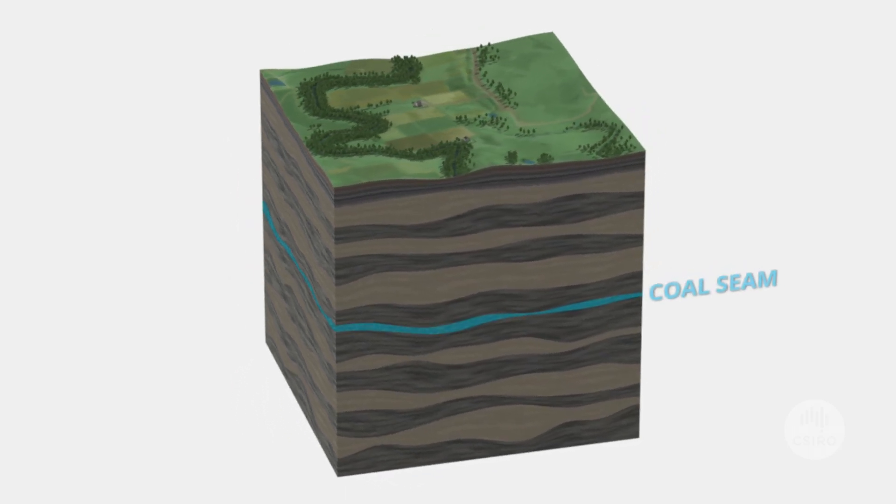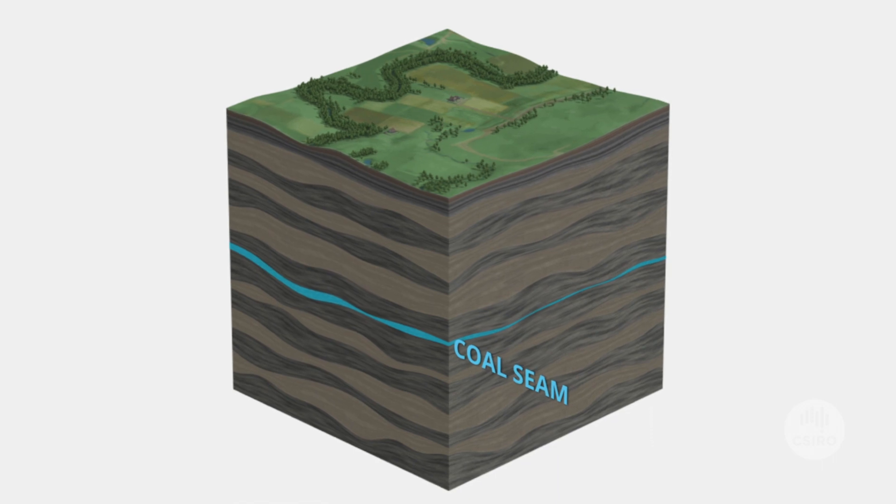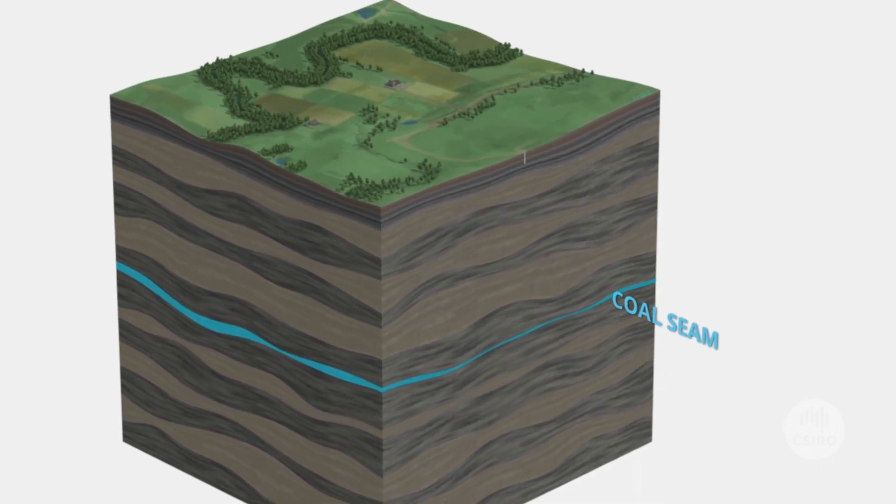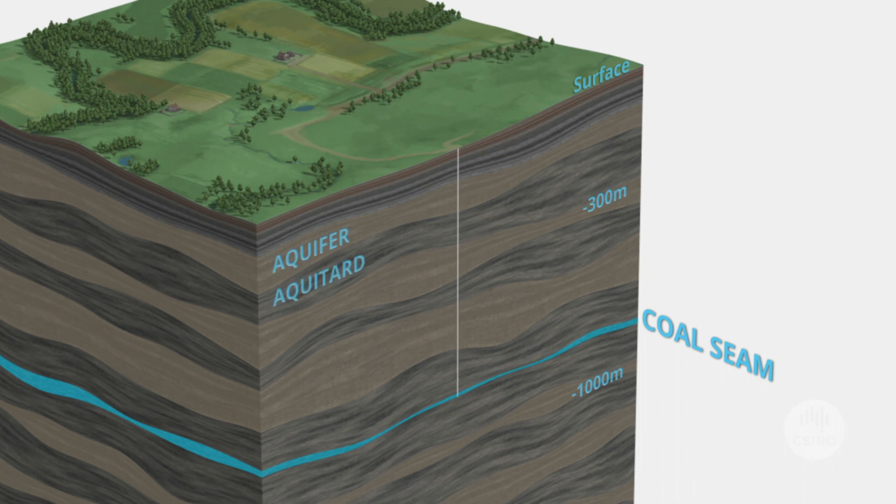Coal seam gas is mainly methane found within coal deposits trapped underground by water pressure. To access the gas, a well is drilled anywhere from 300 to 1000 metres deep through various layers of rock to the coal seam.